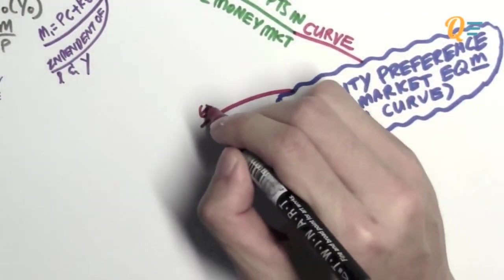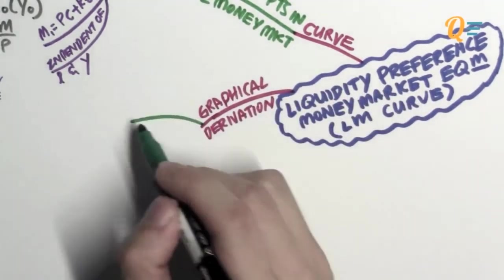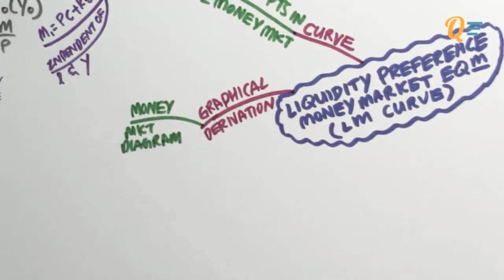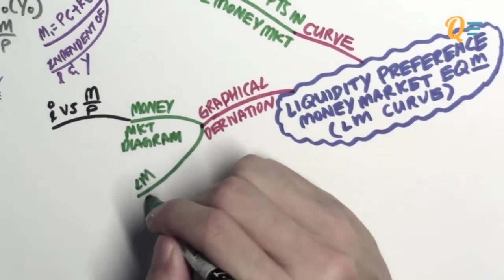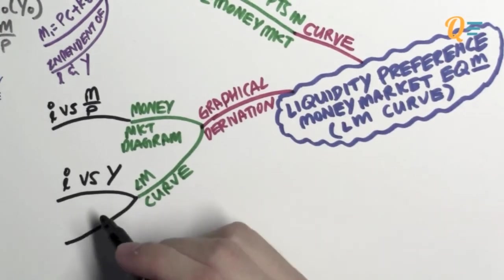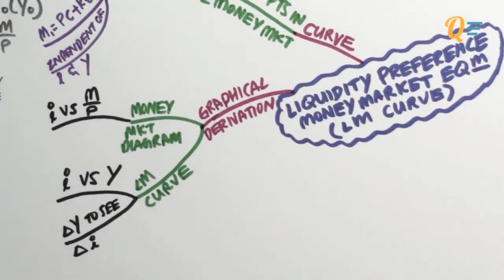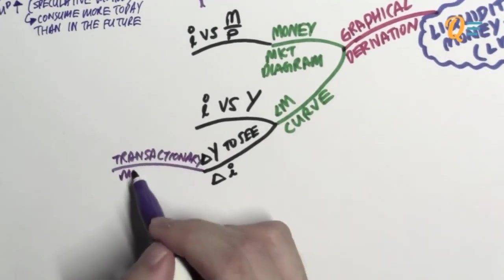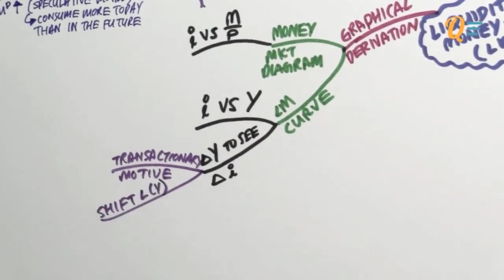So that was the basics of the money market equilibrium diagram. Let's take a look at the graphical derivation of the LM curve, which shows all the equilibrium points in the money market. You're going to need the money market diagram, which is a graph with the nominal interest rates against the real balances, and use that to derive your LM curve, which will be plotted on a graph with interest rates against GDP — the same as the IS curve. What you need to do is change the income level to see a change in interest rates. This is the transactionary motive for holding money in play, where you shift the demand for money when a change in income occurs.